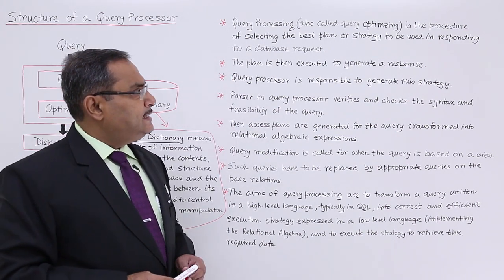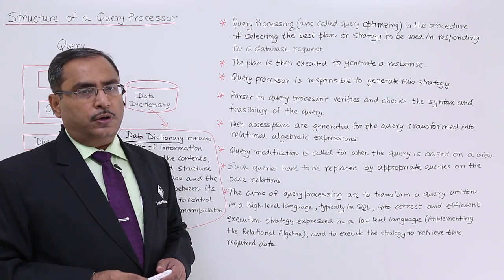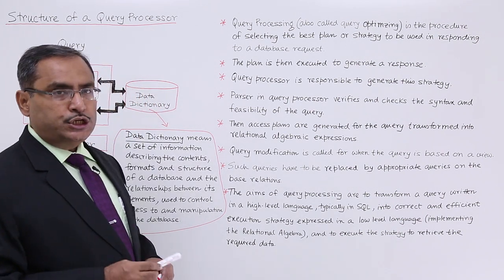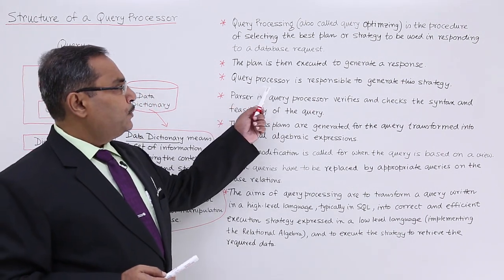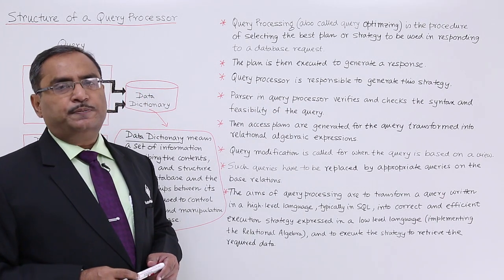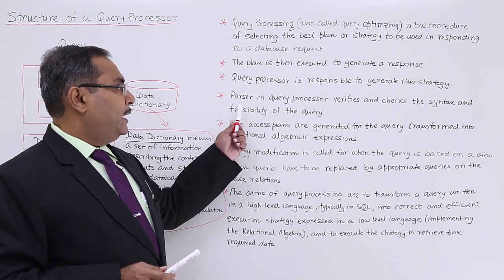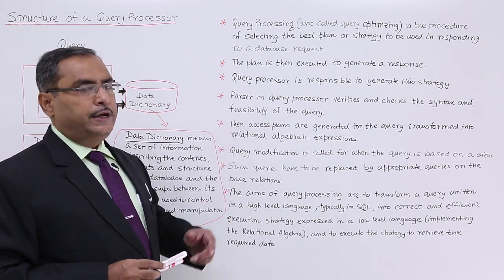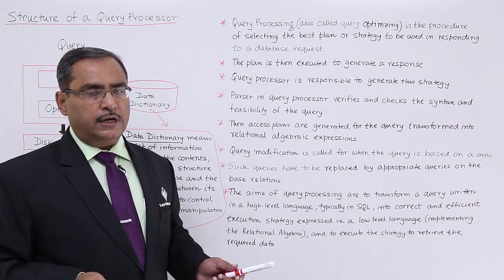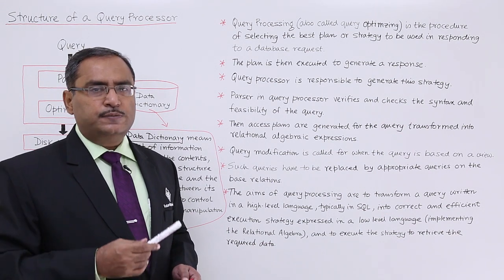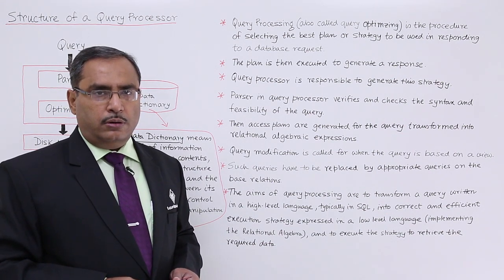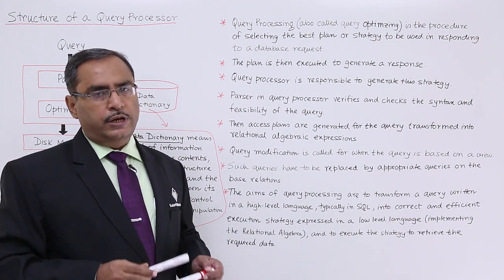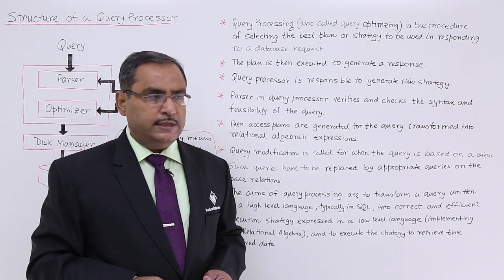The plan is then executed to generate a response — one plan will be made and that will generate the response to the query written initially in SQL. The query processor is responsible for generating this strategy. The parser in the query processor verifies and checks the syntax and feasibility of the query. During this process, it will generate a parse tree or derivation tree to check whether the query has successful parsing.